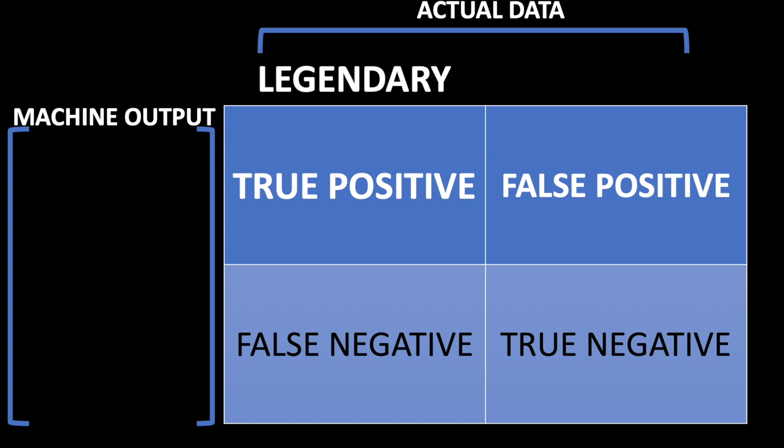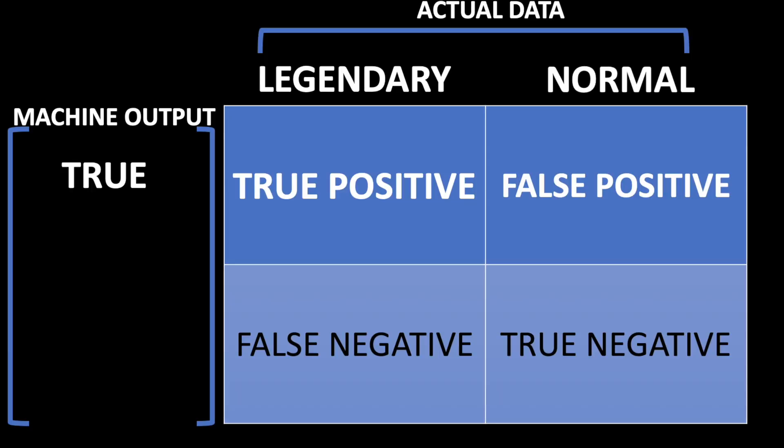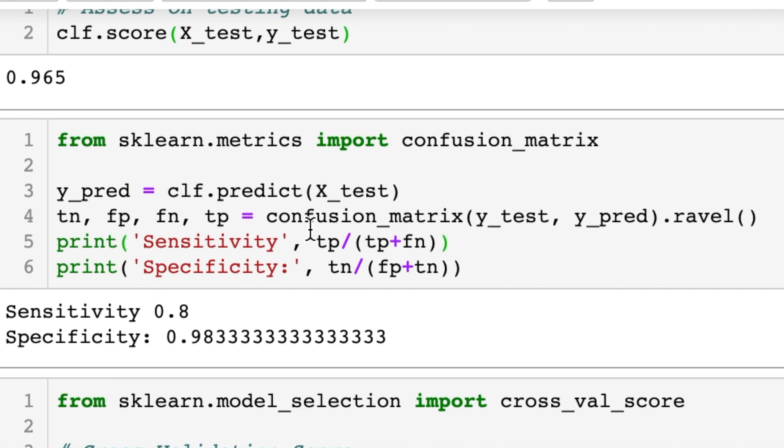We can evaluate further with a confusion matrix, which gives us: true positives (legendary Pokemon correctly identified as legendary), false positives (predicted legendary but actually not), true negatives (correctly identified as not legendary), and false negatives (incorrectly identified as not legendary when they actually are). With these values we can calculate sensitivity and specificity.